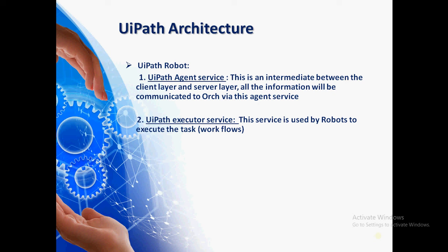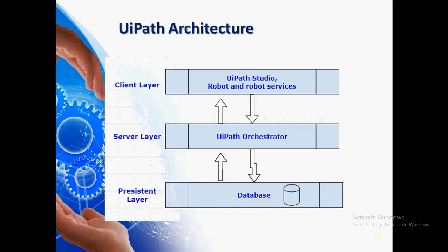The agent service is used to communicate between the client layer and the server layer. It informs the orchestrator about all the workflows you design in Studio. Through robot services we can communicate to UiPath Orchestrator, which is in the server layer. To summarize, the client layer is what you can see in GUI form — it includes UiPath Studio, the robot, and robot services. One service communicates with the server layer (orchestrator), and one executes the workflow.